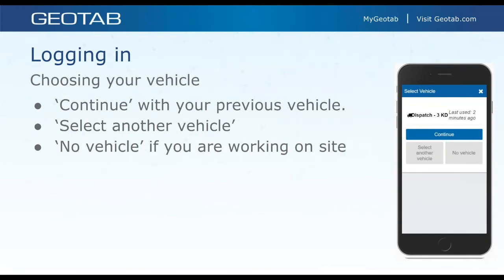Once you've logged in, the first option is to select your vehicle. The previously used vehicle will likely be pre-populated. If it's not the right one, you can select another vehicle and search by name, serial number, license plate, or VIN. If you're not driving yet and don't know which vehicle you'll use, you can select no vehicle — this lets you go on-duty or off-duty, but you can't go into drive status or sleeper berth until a vehicle is selected.